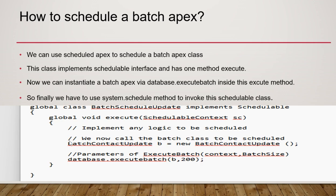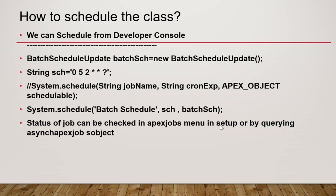Creating the schedulable class doesn't execute it immediately. To actually schedule it, create an instance of the scheduler class, define a cron expression specifying when to run — hourly, weekly, monthly — and call System.schedule with a job name, the cron expression, and the schedulable object instance. The batch will then execute at the specified time. Job status can be checked in Apex Jobs or by querying the AsyncApexJob object.